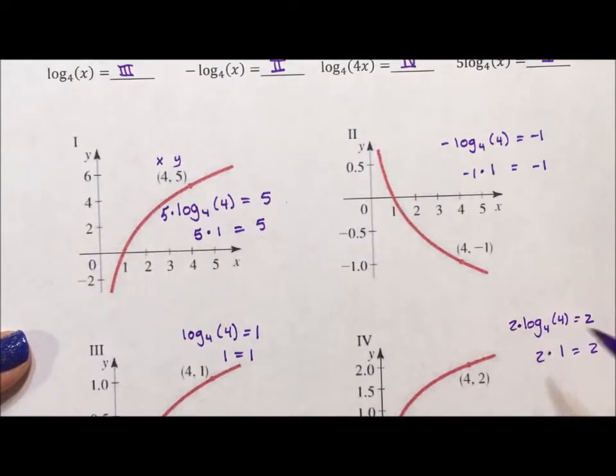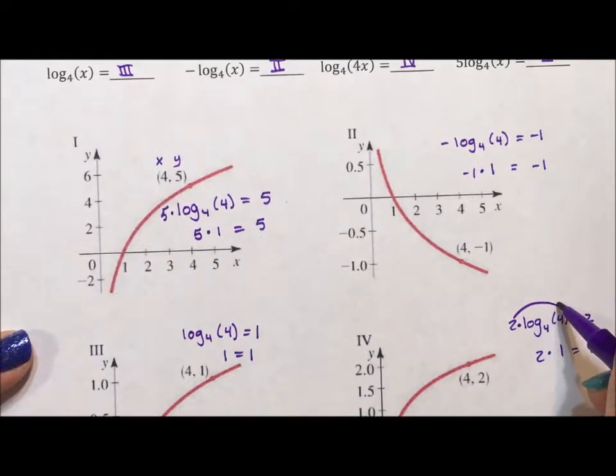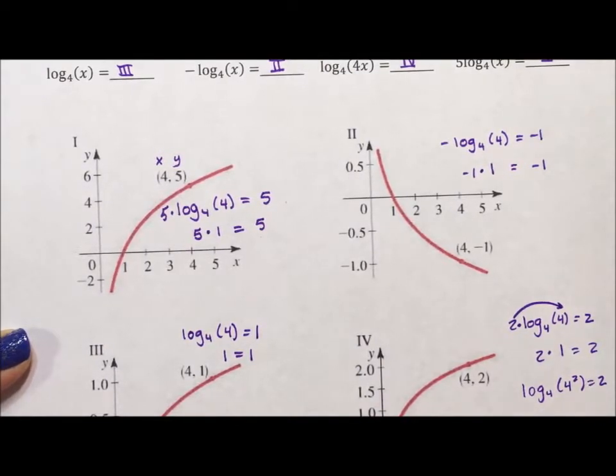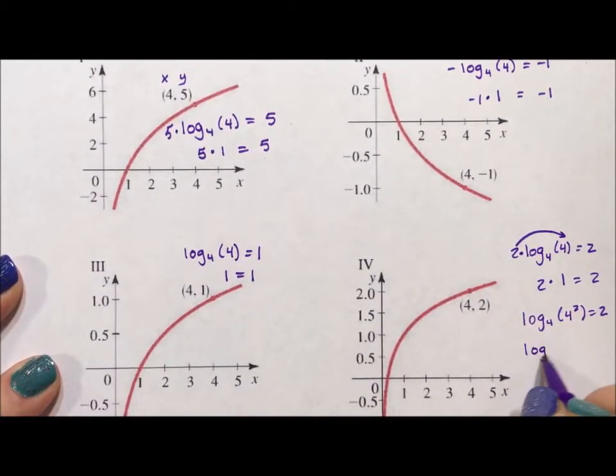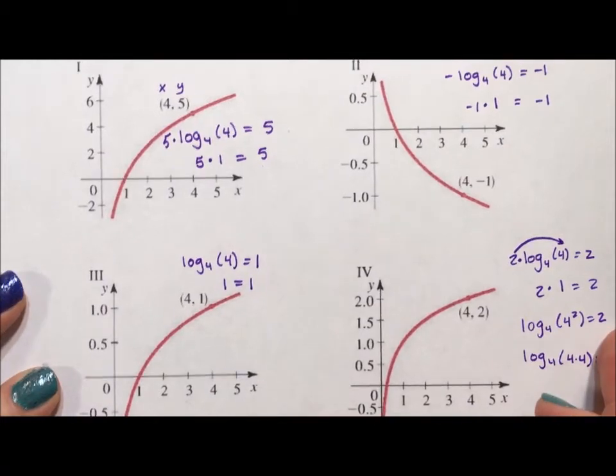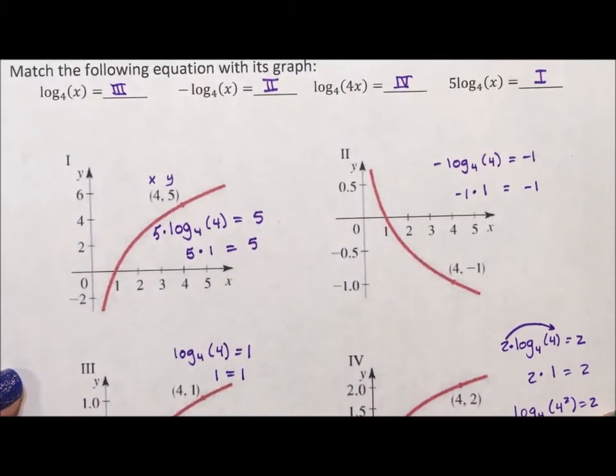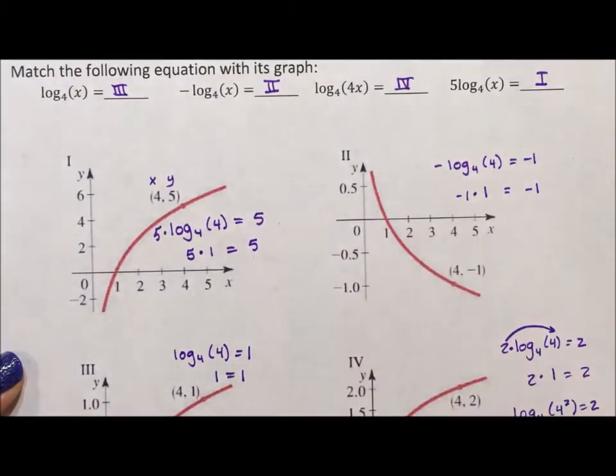But if this is 2 times, remember the power rule says that 2 times is the same as an exponent. So we can actually say log base 4 of 4 squared equals 2, or log base 4 of 4 times 4 equals 2. And if this is our x, we see that sure enough, that equates with this third equation.